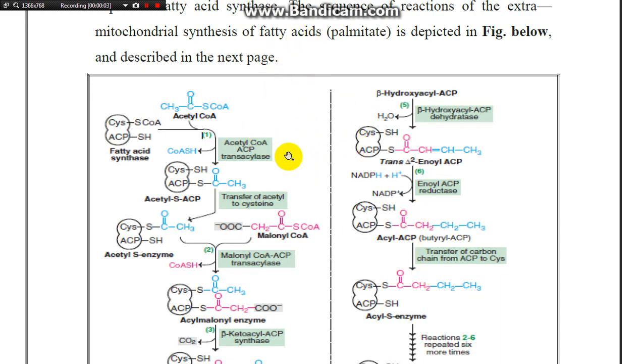For fatty acid synthesis, this scheme shows the first step: production of acetyl CoA in mitochondria from several sources including ketone bodies, fatty acids, amino acids, and NADPH. This is followed by transport of the acetyl CoA.